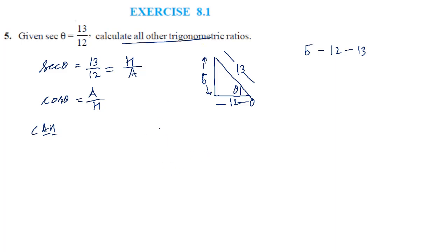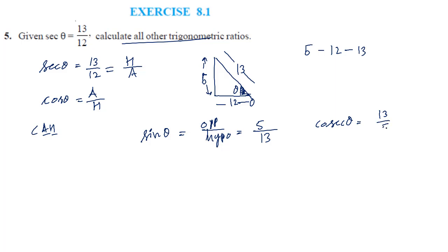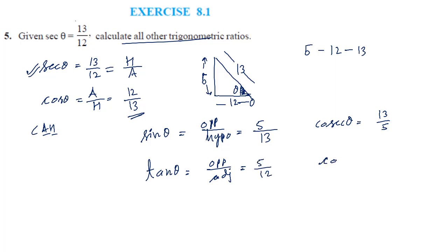Now finding all trig ratios for question 5: sin θ is opposite by hypotenuse = 5 by 13. Cosec θ is the reciprocal, so 13 by 5. Cos θ is the reciprocal of sec θ, so 12 by 13. Tan θ is opposite divided by adjacent = 5 by 12. Cot θ is the reciprocal of tan θ, so 12 by 5.